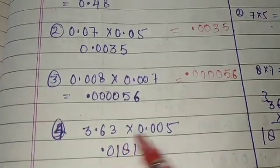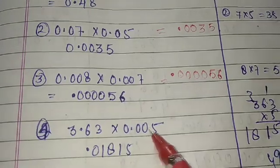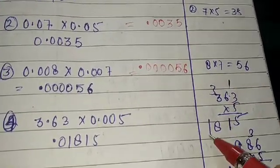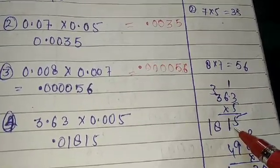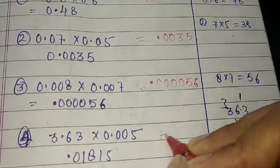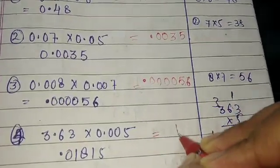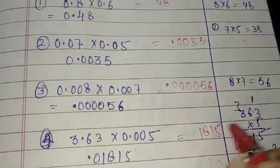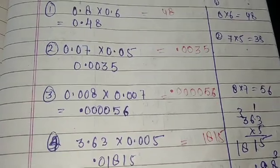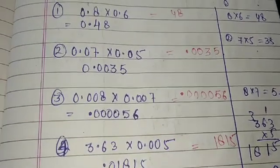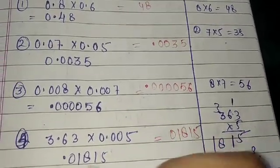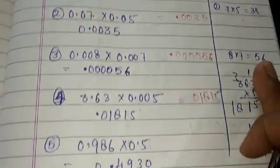Next: 3.63 into 0.005. Take digits: 363 times 5 = 1815. Count decimal places: 2 in 3.63 and 3 in 0.005 — total 5 decimal places. We have 4 digits in 1815, so add one leading zero. Place point to give 0.01815.